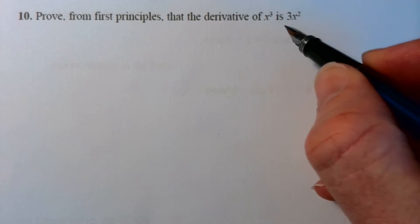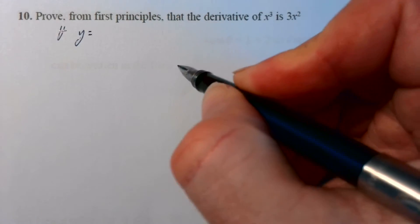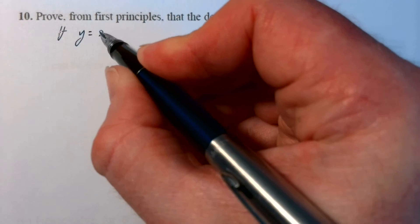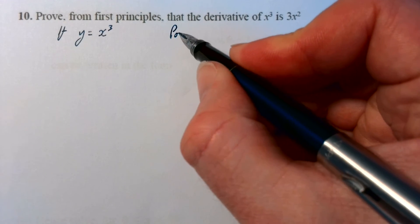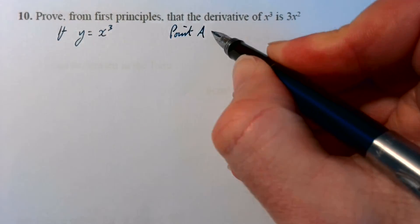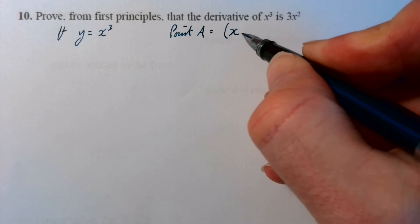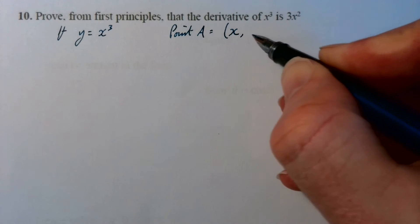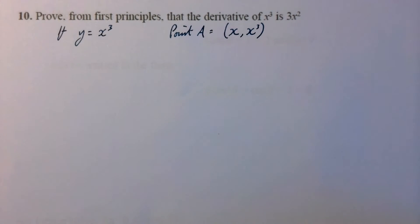So your first point, for y equals x cubed, point A I like to call it, the x coordinate is x and the y coordinate would be x cubed. That's the easy one.